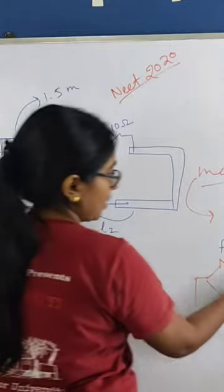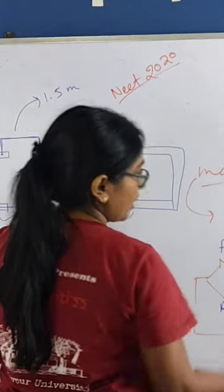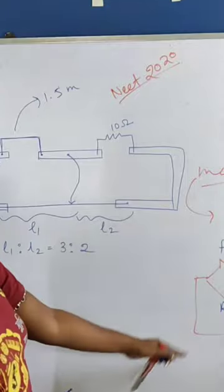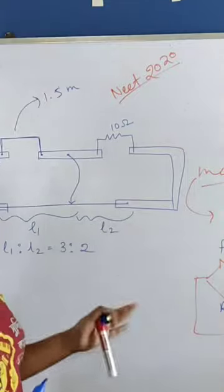In this situation, the current through the galvanometer becomes zero. Okay, this is the principle of the Western Bridge. We will apply this principle in this meter bridge.